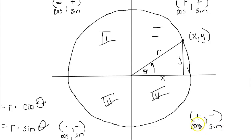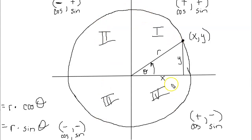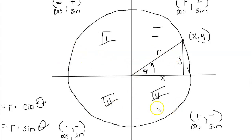Notice the patterns: cosine is always positive in the first and fourth quadrants and negative in the second and third, giving it reflection symmetry over the x-axis. For sine, the positives are in the first and second quadrants and the negatives in the third and fourth, so sine has reflection symmetry over the y-axis.